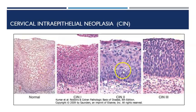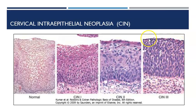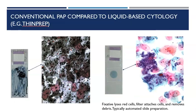In CIN2 proliferative cells are much more prominent. In CIN3 you've got proliferative cells all the way from the basement membrane up to the surface of the cervix. That last slide was histology from a biopsy and we'll look at how biopsies are obtained later on.